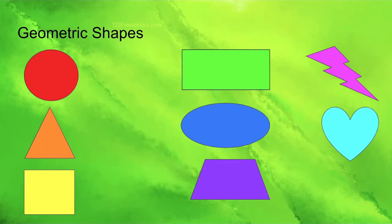Shapes. Geometric shapes are our first type of shape. These are things like circles, triangles, squares, rectangles, ovals, trapezoids, lightning bolts, and hearts. These are geometric shapes that you can use to help in your design.